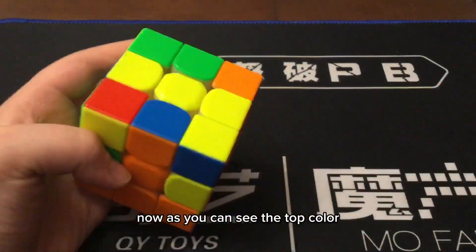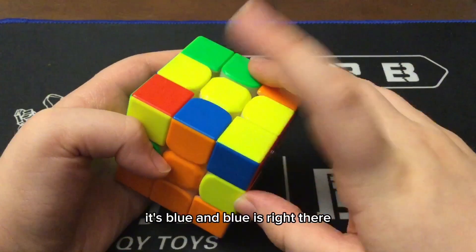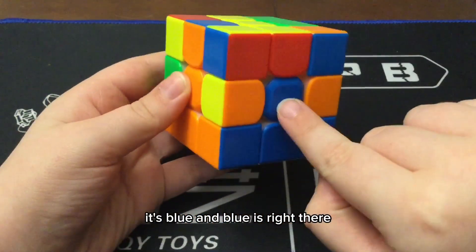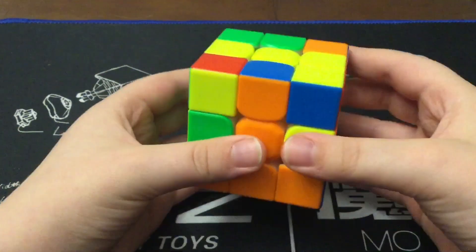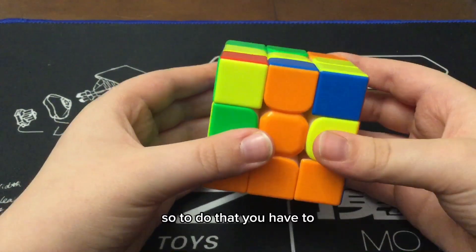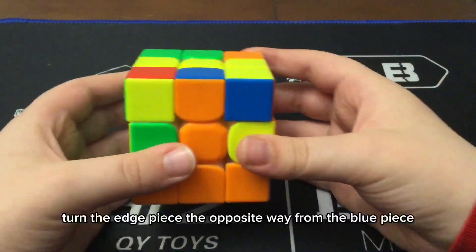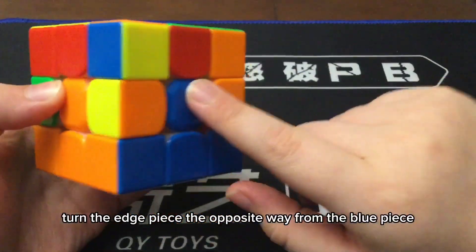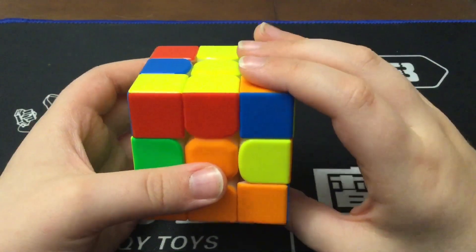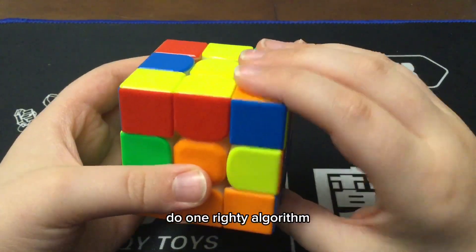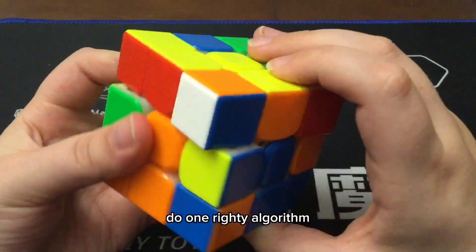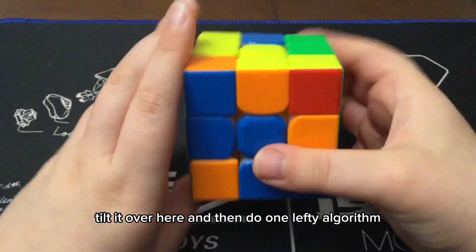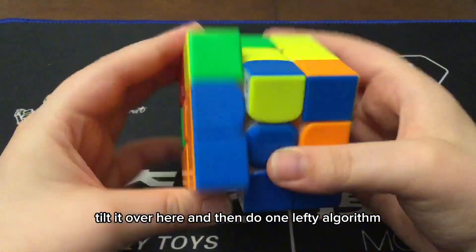Now, as you can see, the top color, it's blue and blue is right there. So, we have to get it in between here. So, to do that, you have to turn the edge piece the opposite way from the blue piece, do one righty algorithm, tilt it over here, and then do one lefty algorithm.